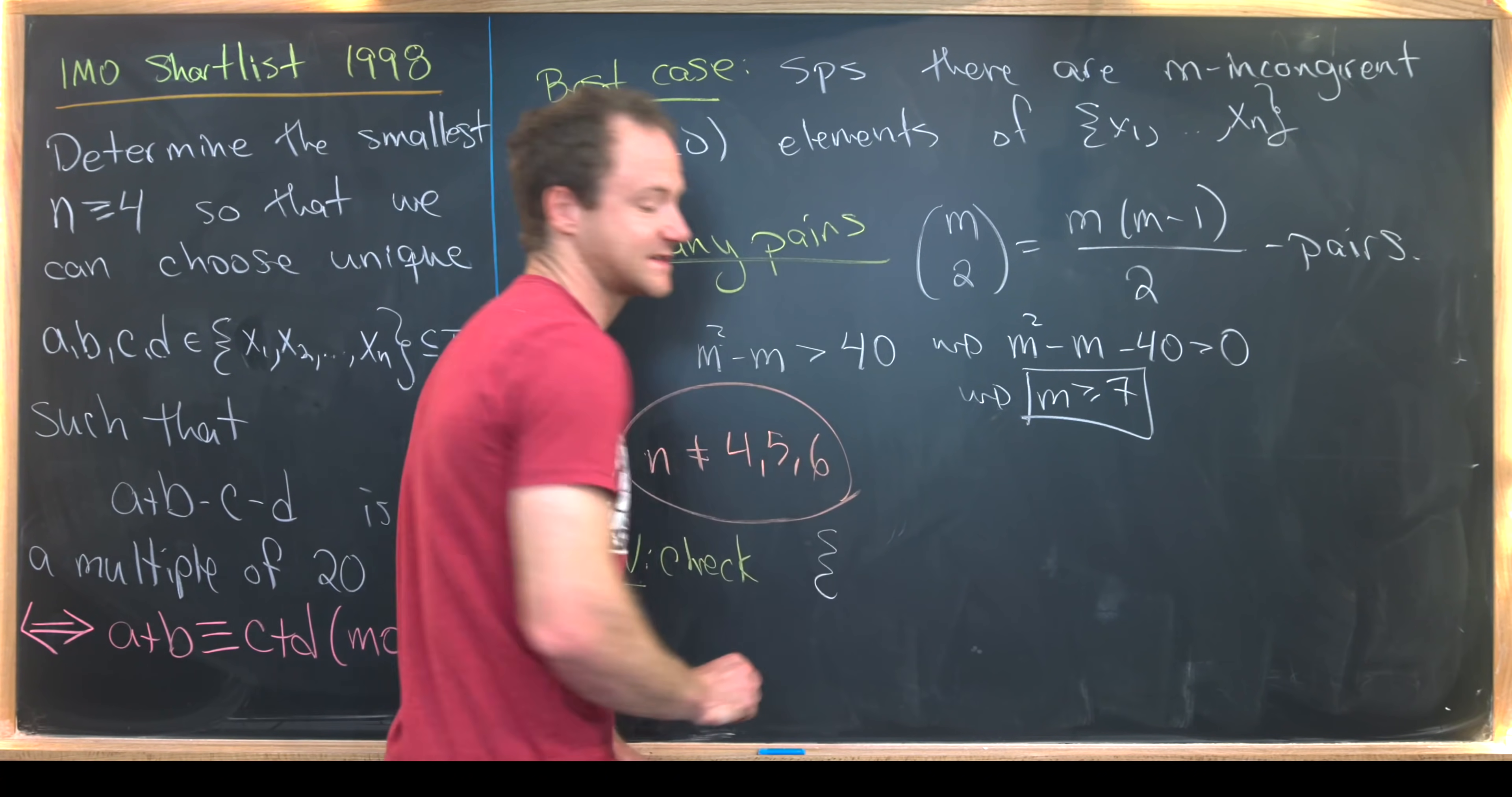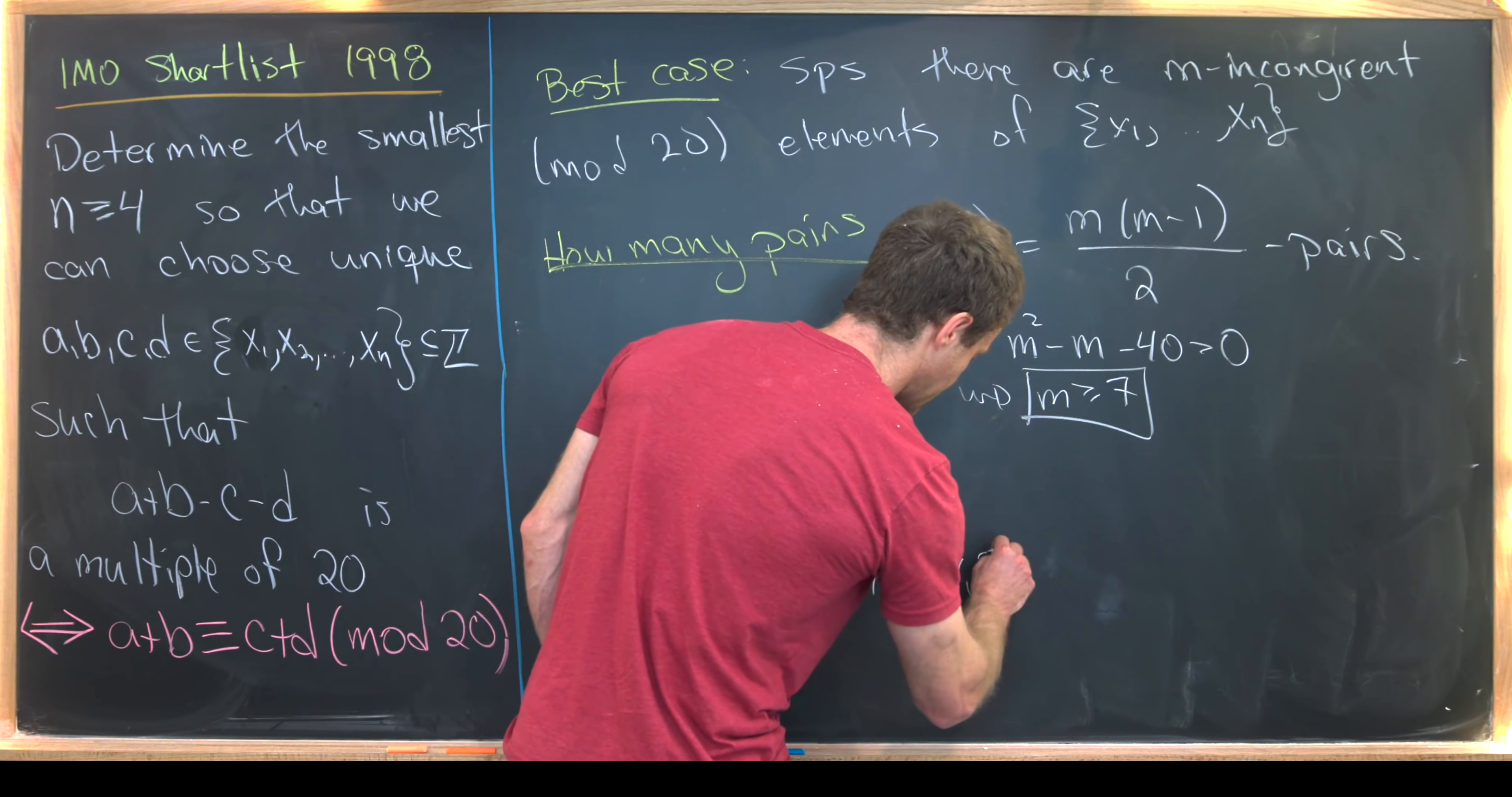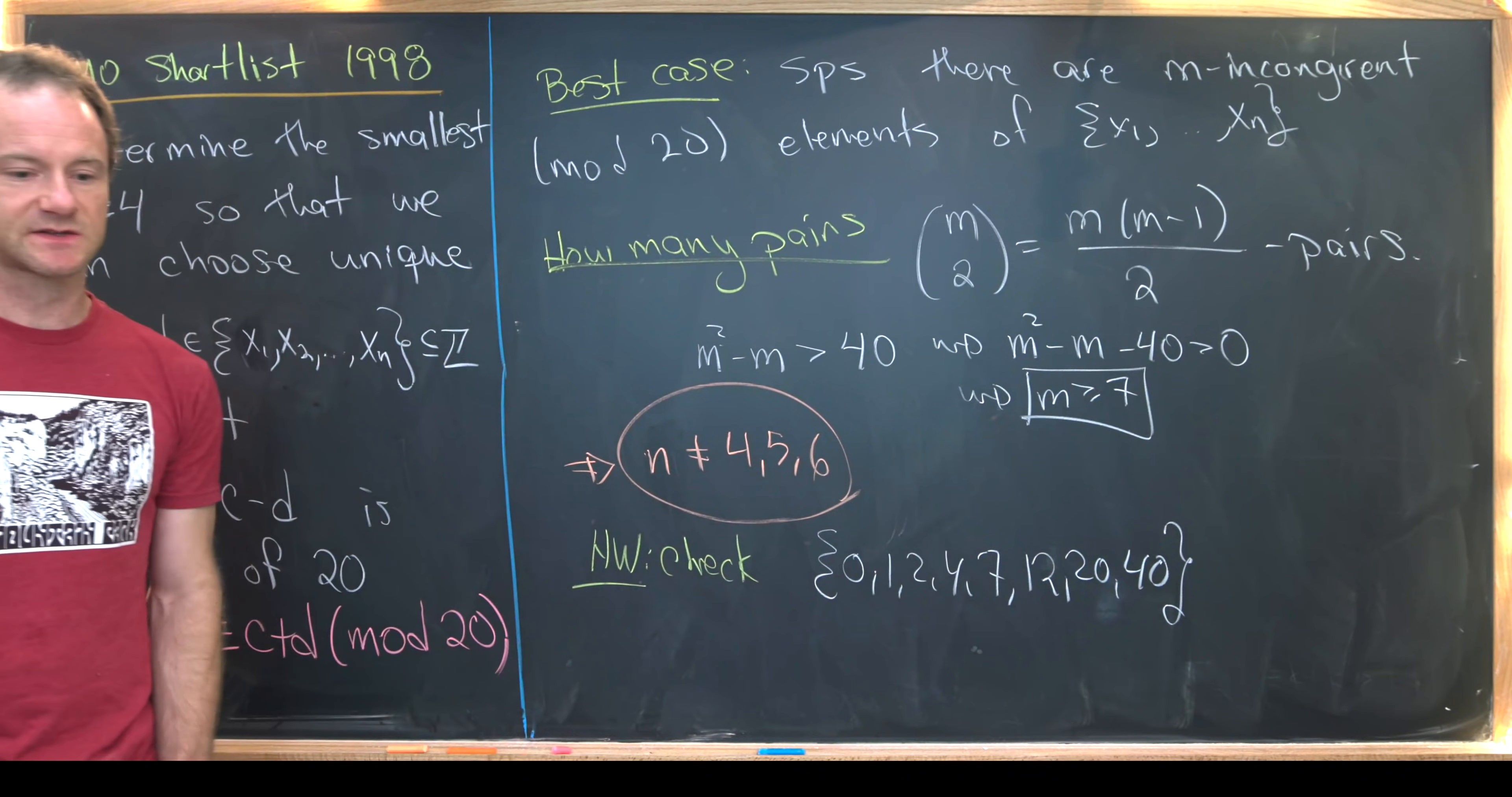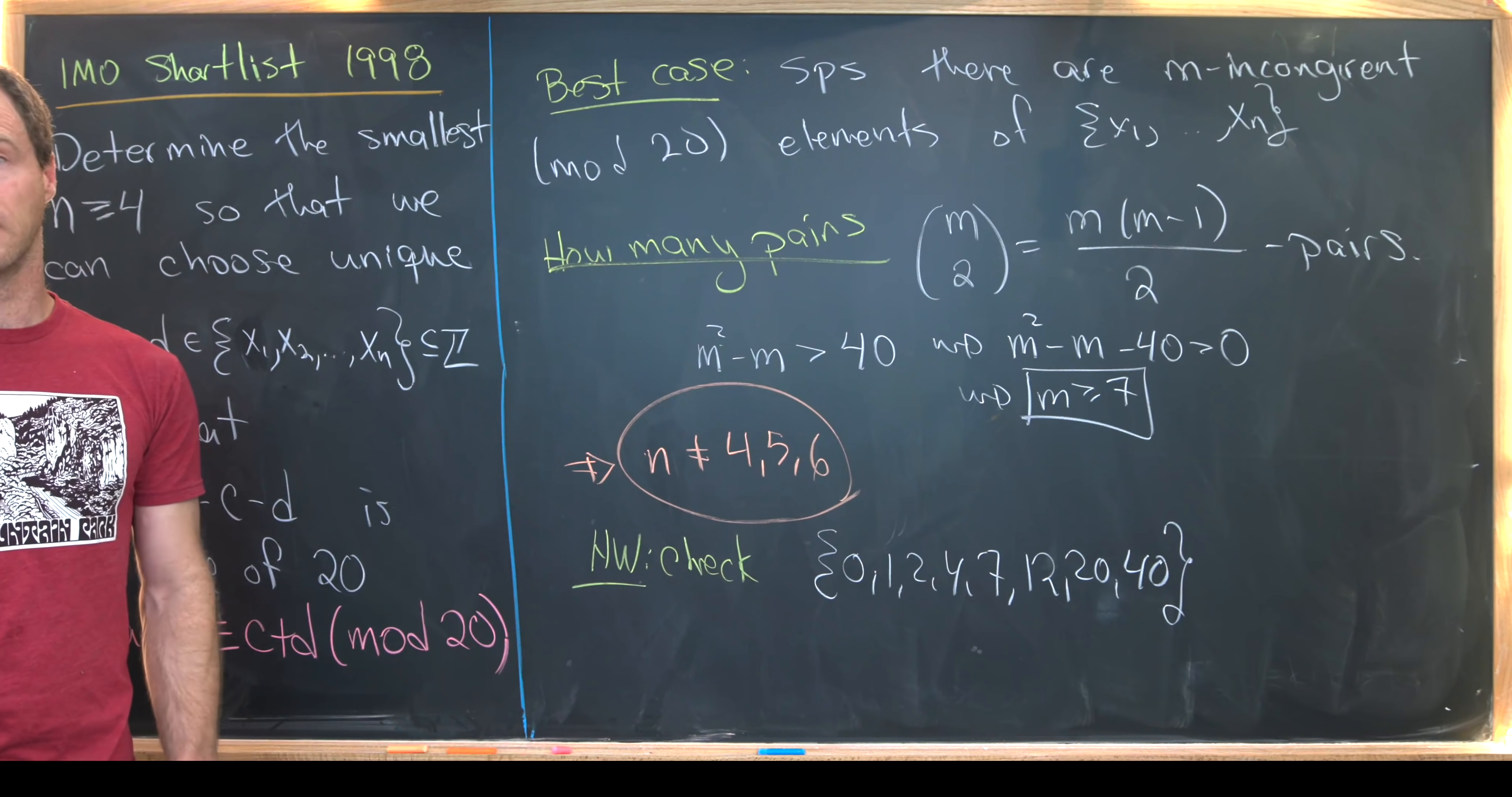And maybe I'll just give as homework check that the following eight element set does not satisfy this property. So what's the eight element set? Well, it'll be 0, 1, 2, 4, 7, 12, 20, and 40. So if you look at this, there are exactly six incongruent numbers here.